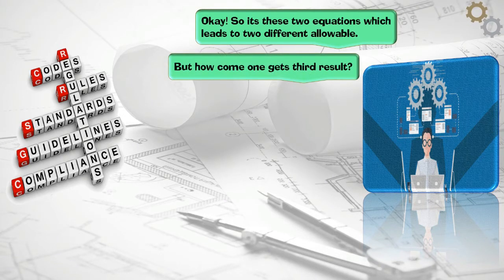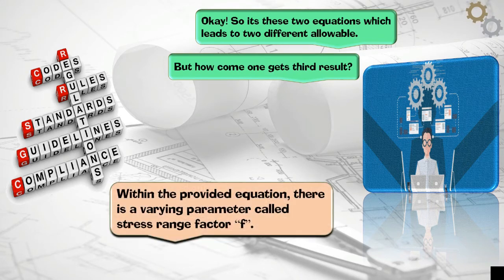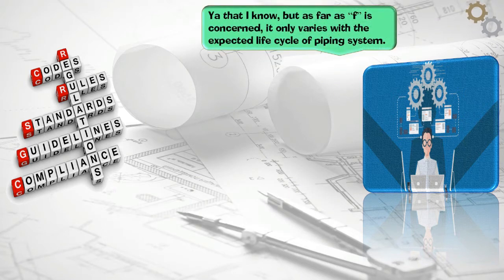But how come one gets third result? Within the provided equation, there is a varying parameter called stress range factor F. Yeah that I know, but as far as F is concerned, it only varies with the expected life cycle of piping system.